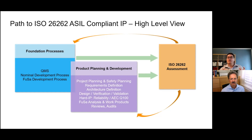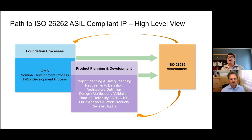Once you have those foundational processes, then you have the product planning and development itself. As we know, there's a lot of typical nominal requirements that can be a very long cycle. But then you have all of the functional safety requirements on top of that, and in the case of hard IP you also have the reliability and AEC-Q100 type requirements. Then we get into the ISO 26262 assessments, which can bring us back through changing our processes and changing our design to make sure everything is covered. Typically in a V-model type development, all of these functional safety processes are done in parallel with the nominal development to try to avoid these iterations.